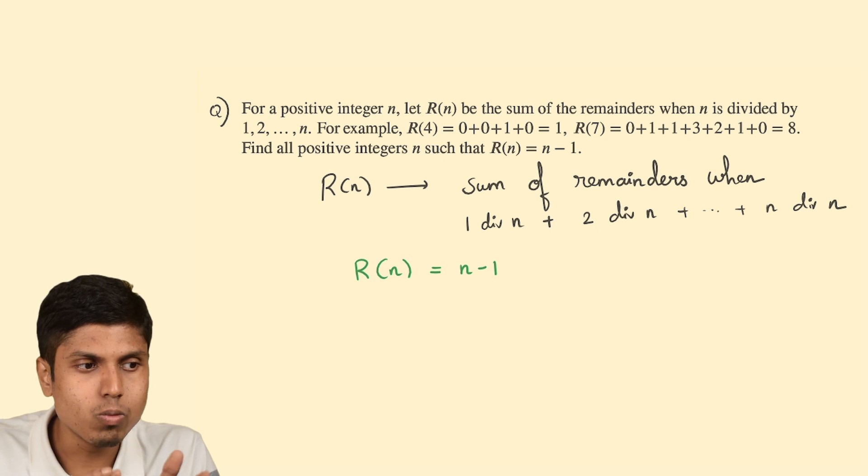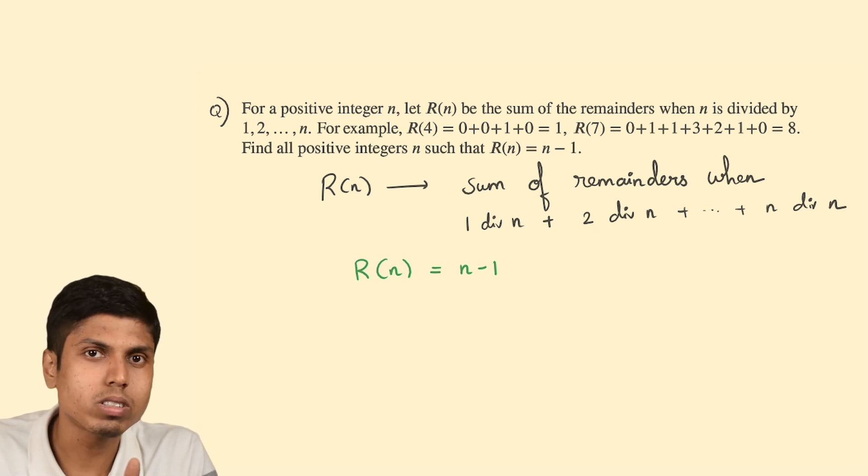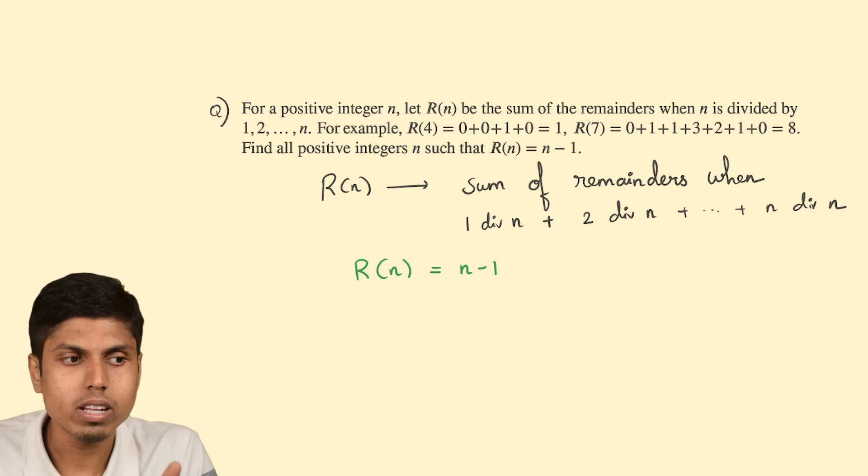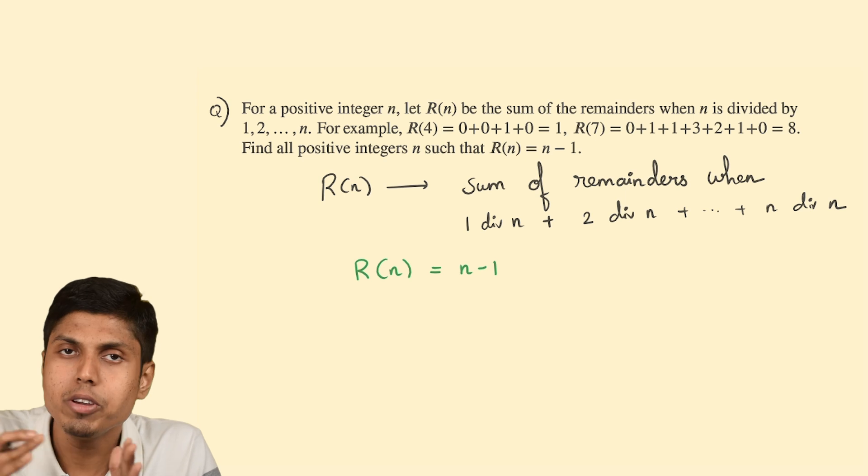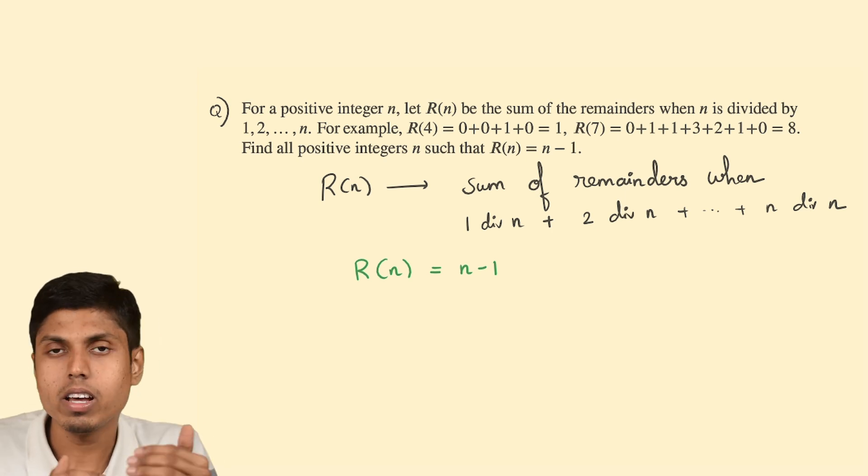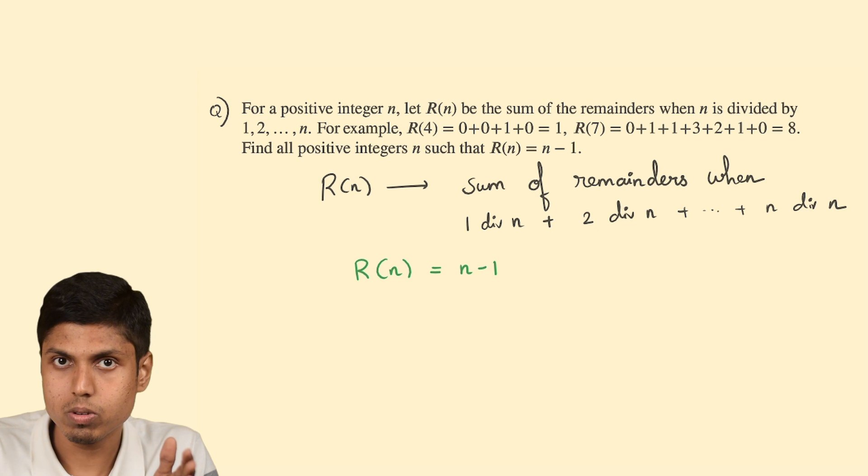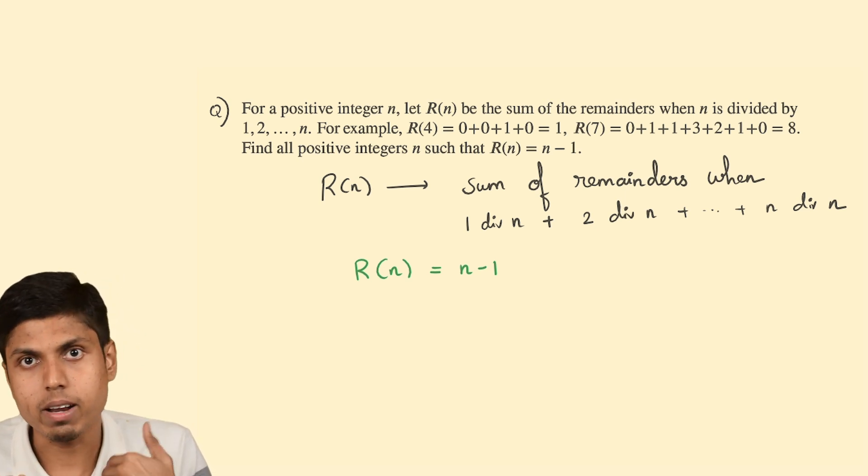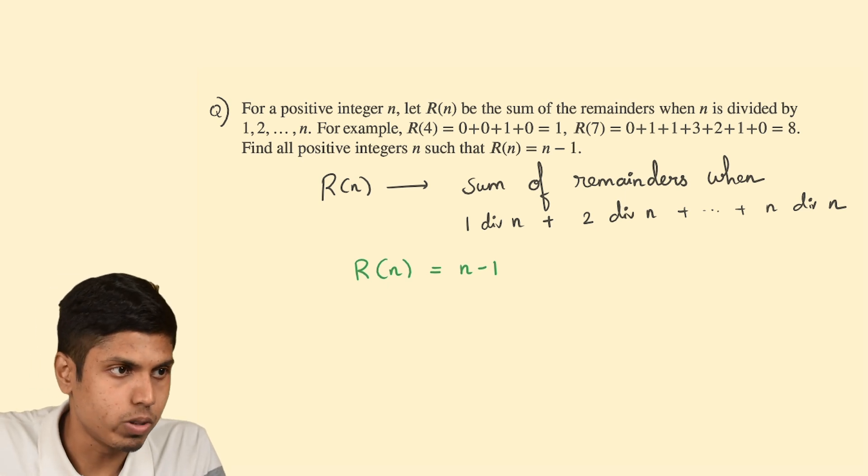As you work through some examples, you will see that when n crosses 10 or 15, the value of R(n) shoots up and it is far beyond n minus 1. We try to bound the value of R(n) from below so that when you substitute n minus 1, you can get the condition for n. Let's try to do that.